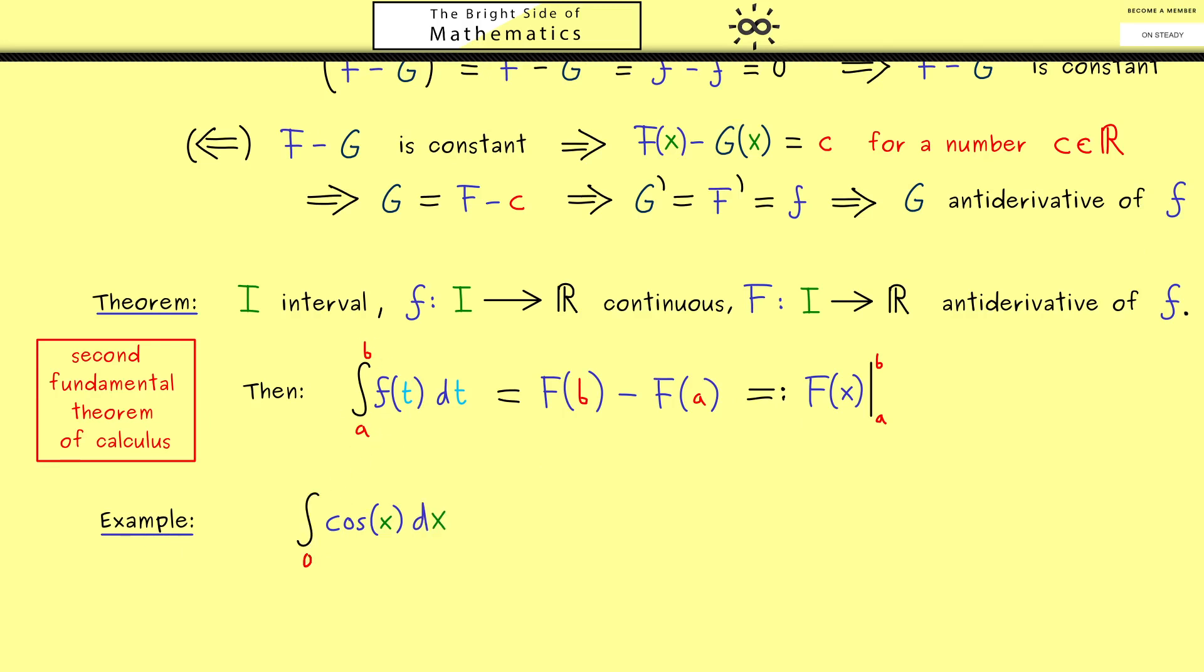So our f is the cosine, and now we look at an integral, maybe from 0 to 1. Hence you see this is definitely an integral we don't want to approximate with step functions. Now the fundamental theorem of calculus tells us just use an antiderivative. And of course we know if we form the derivative of sine of x, we get the cosine of x. Therefore this is an antiderivative we can use. Now the calculation just tells us put in 1 and put in 0. However, sine of 0 is 0, therefore only sine of 1 remains.